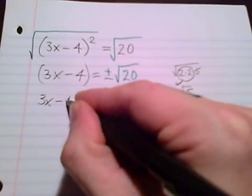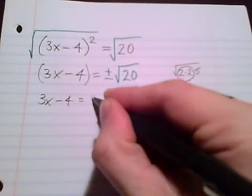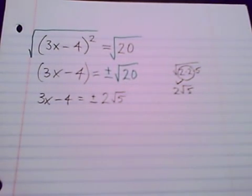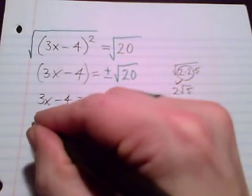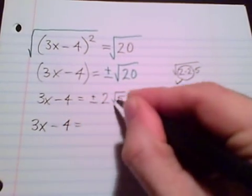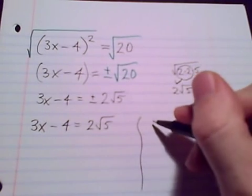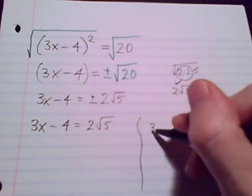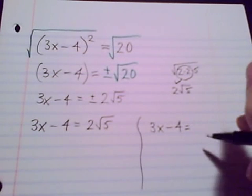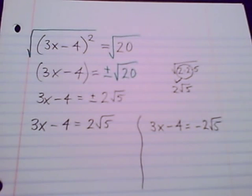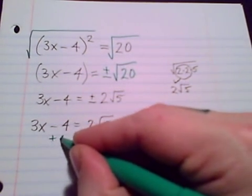3x minus 4 equals positive or negative 2 radical 5. Now I will finish solving. If I want to keep my rules simple, then the simple rule would be when you get to the end, just split that up. Get the positive, the plus or minus symbol out of there. Get it into two equations. That would be my advice for keeping the steps in my mind straightforward and keeping myself accurate. Split it up into two equations.